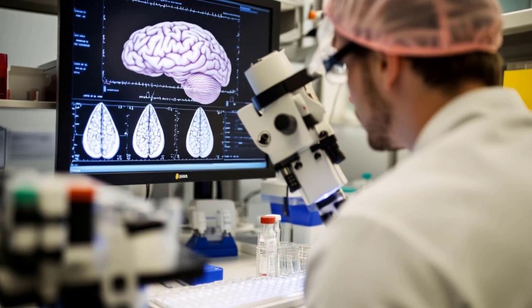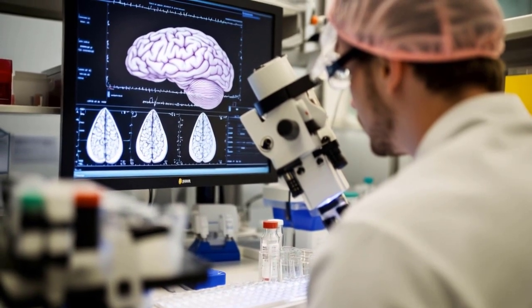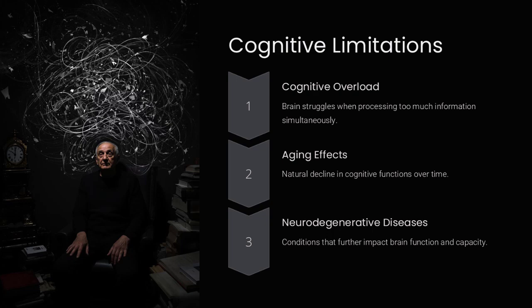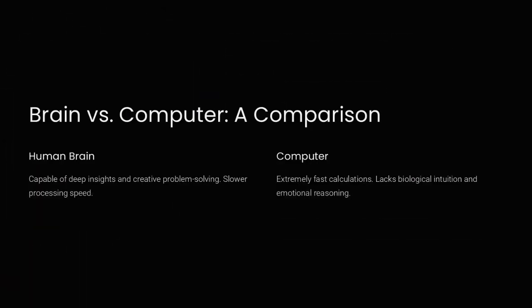Another major constraint is memory. The brain has around 86 billion neurons, each capable of forming thousands of connections, leading to a theoretical storage capacity in the petabyte range. However, not all memories are stored permanently, and retrieval is not perfect.